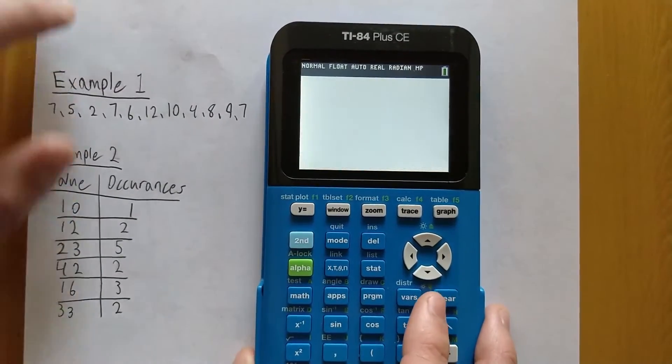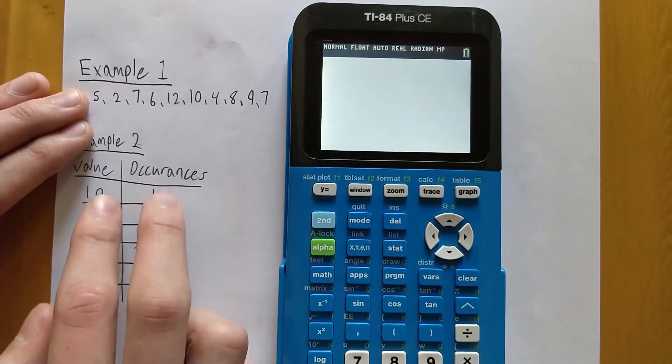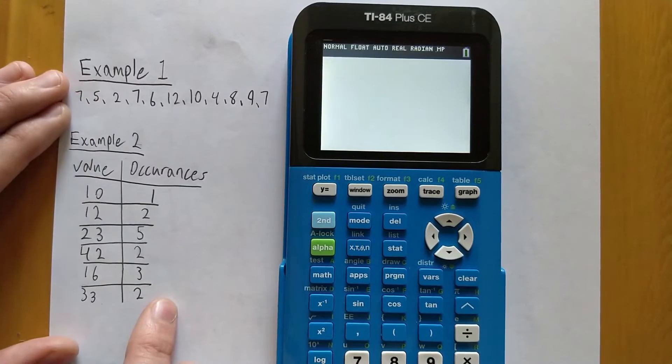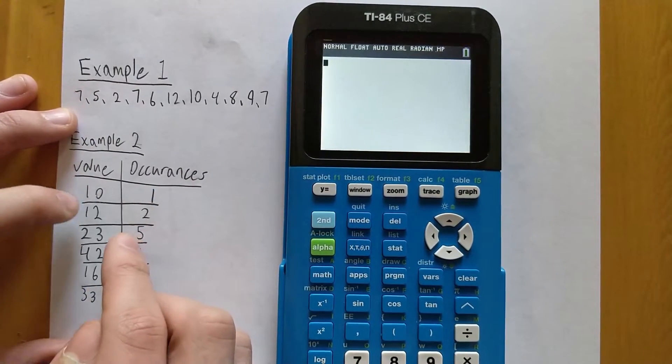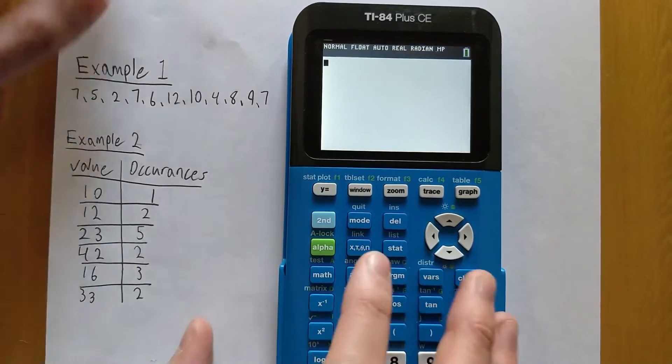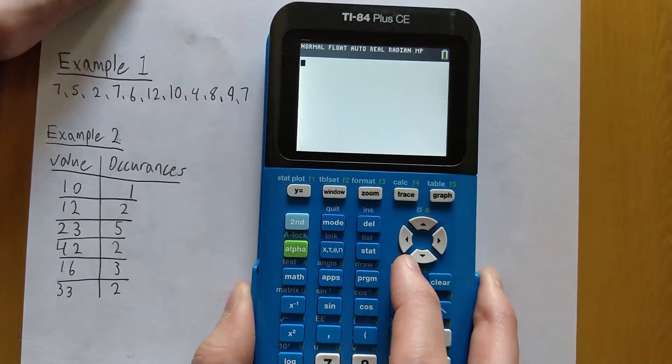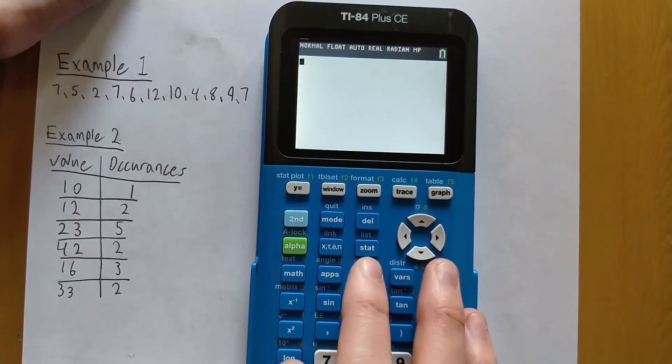And that's pretty much all there is to it. But if you have a list that has a number of occurrences for each value—so this basically means that 10 occurs one time in the data set, 12 occurs two times, and so on—this process is slightly different but it's still pretty straightforward. Just go back to STAT and select Edit.